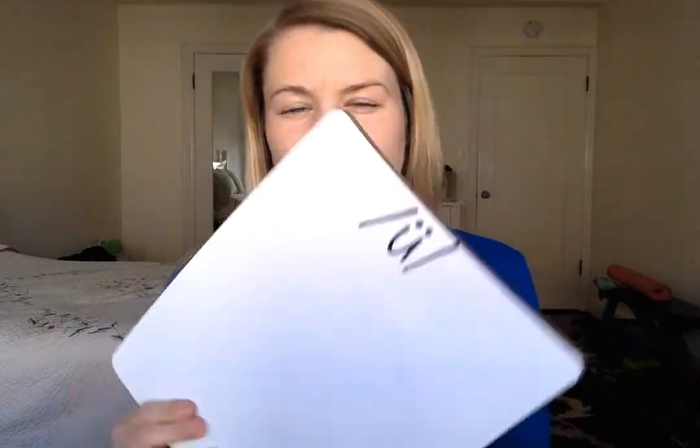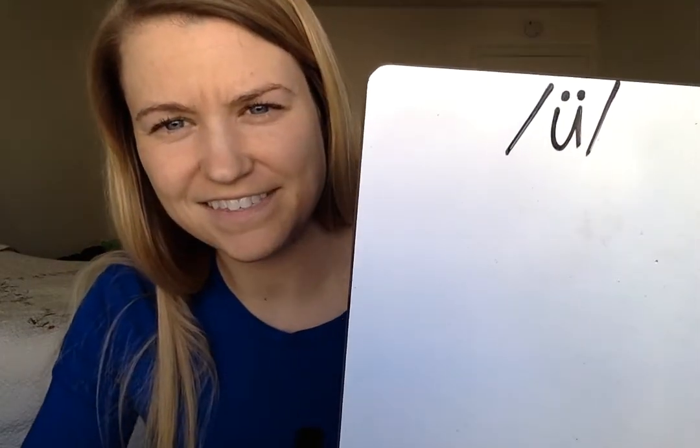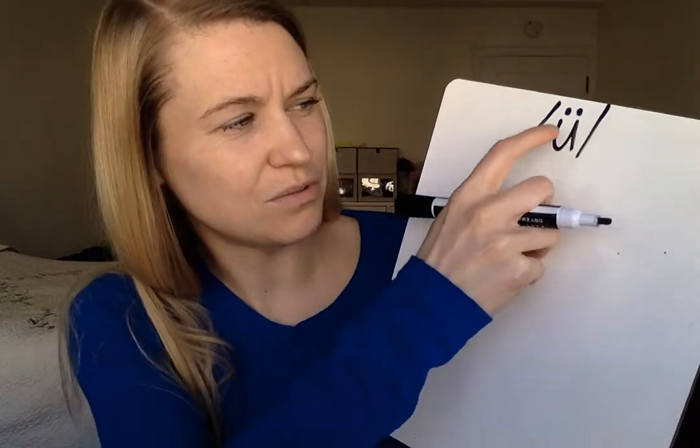And we have the oo sound. Whenever we write a sound, we always do it in between some forward slashes. And this sound is actually written like this — it's the oo sound, shown with an oo with two dots between our slashes. So it's the oo sound spelled OO.